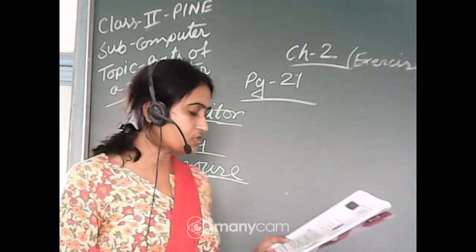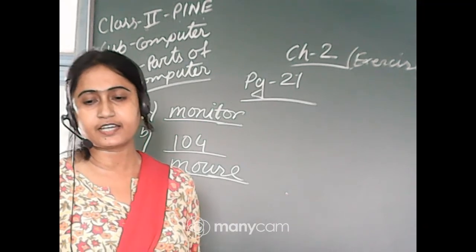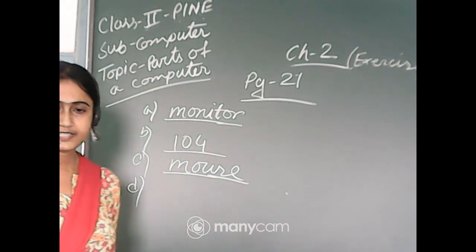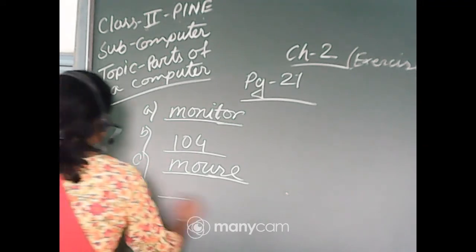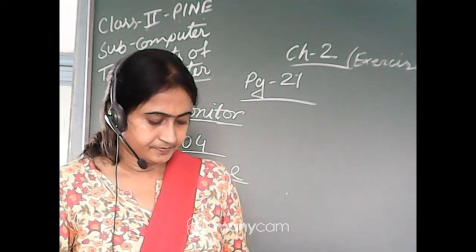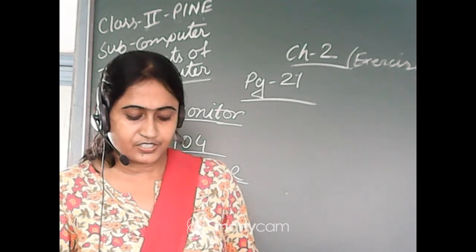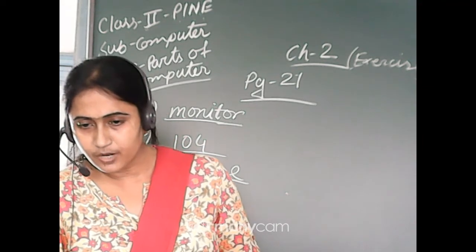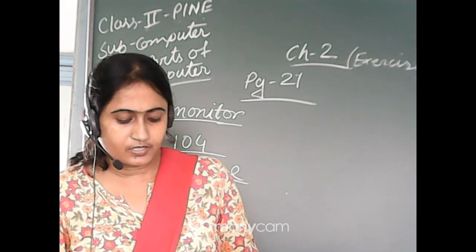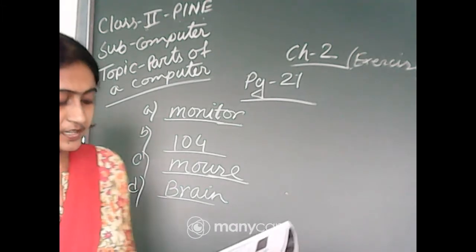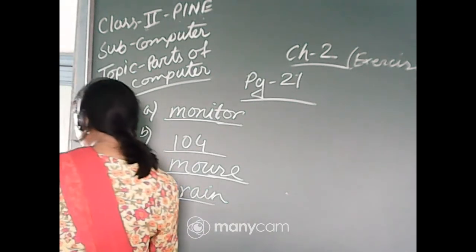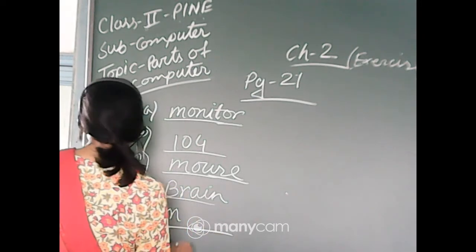Number D: a CPU is also called the dash of a computer. Yes, you are correct. A CPU is also called the brain of a computer. Very good, Potushna, Oshmi, Reza. Brain — B-R-A-I-N. Number E: a dash helps us to draw pictures and play games. Very good, Oshmi, Reza, Potushna, Auditro. Number E answer: Mouse. A mouse helps us to draw pictures and play games.